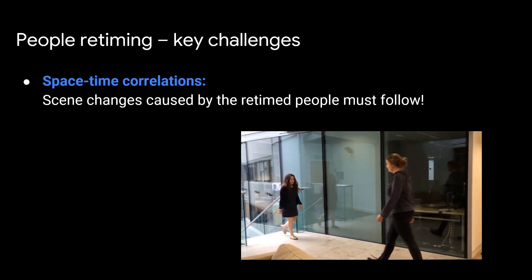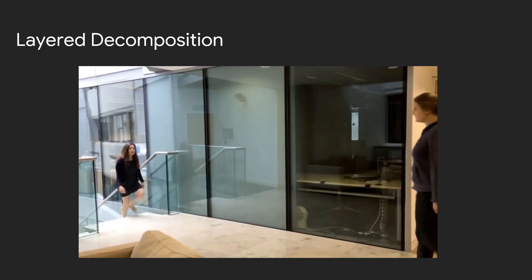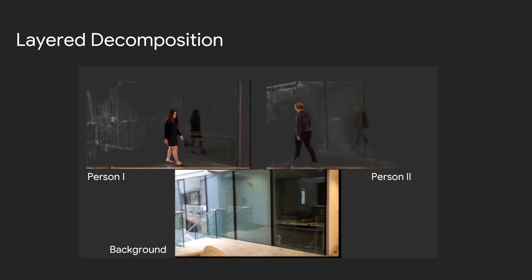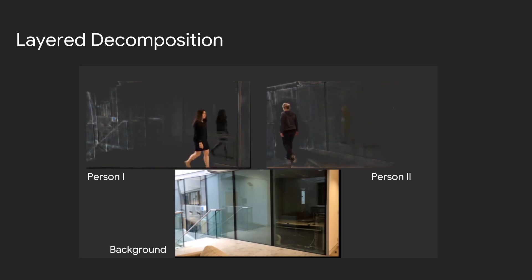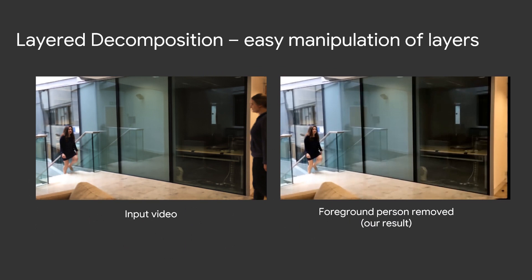If we want to retime the lady on the left, we must also retime her reflection on the glass. Another challenge is that retiming often creates new occlusions and disocclusions that must be handled properly. What allows us to overcome these challenges is a human-specific layer decomposition of the input video. Each layer not only represents a person, but also the scene elements related to them. Each layer also provides a full-body estimate of the person even if they are occluded in the original frame. With our layer decomposition, we can easily edit a video by manipulating the layers — for example, removing a person by simply not rendering their layer.